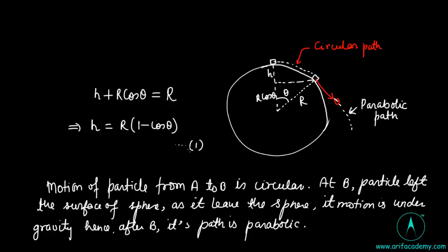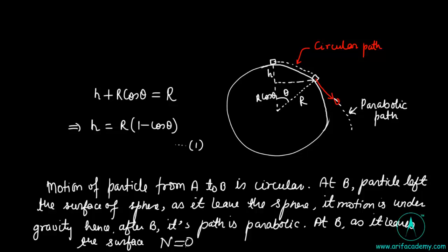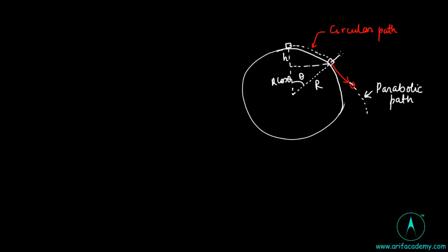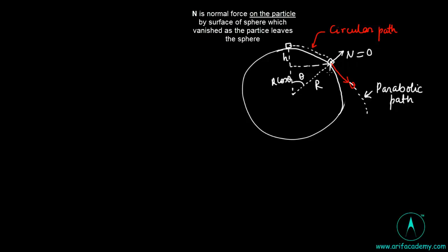The motion of the particle from A to B is circular. At B, the particle leaves the surface of the sphere, and after B its path is parabolic. At B, as it leaves the surface, the normal force N equals zero. The normal force N is the force on the particle by the surface of the sphere, which vanishes as the particle leaves the sphere, so N = 0.